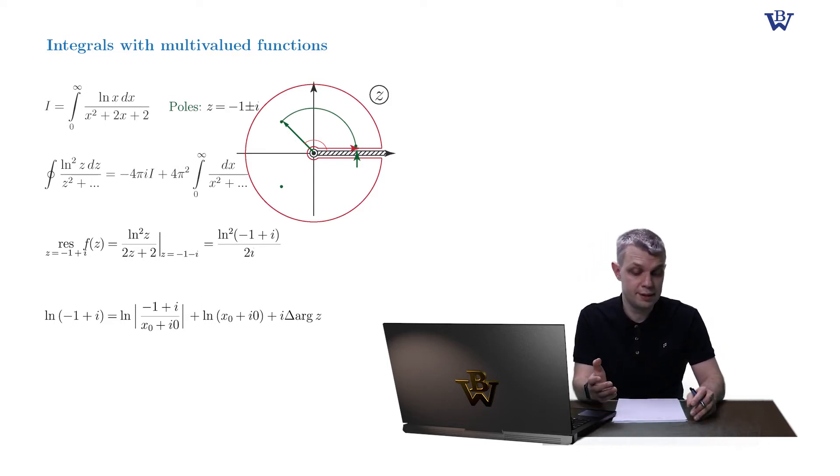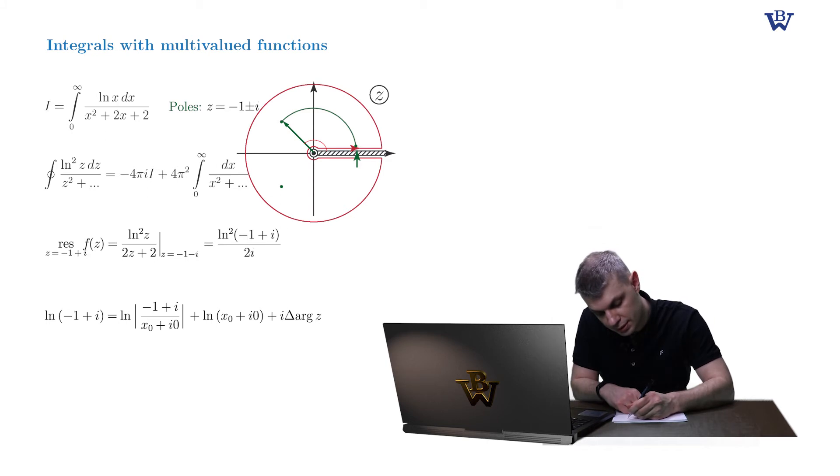So to extract the delta argument, let's make a simple plot. And you obviously see that z number arrow rotates by 3 pi by 4. So our delta argument of z is simply 3 pi by 4.